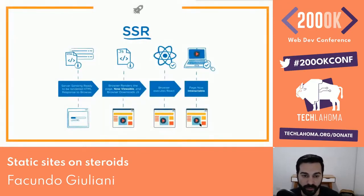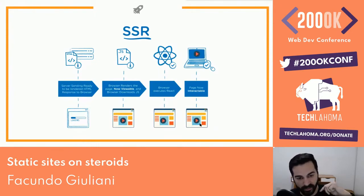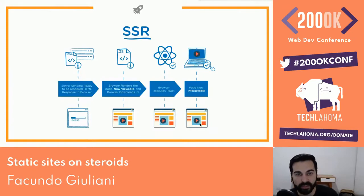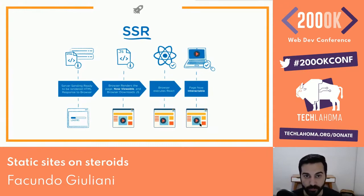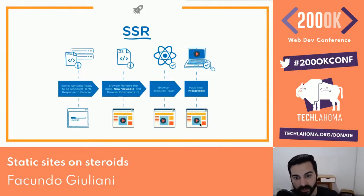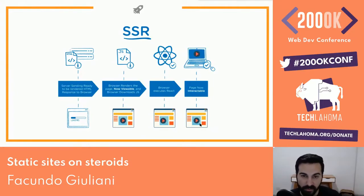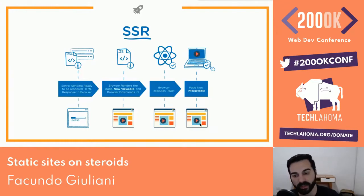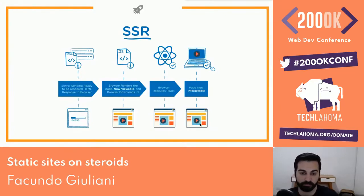For server-side rendering, we request the web page and the web server responds with an HTML document. We immediately have a viewable version of the application. In the meantime, JavaScript files are downloaded and executed, React is initialized, and when all the JavaScript code runs, we have an interactable website. Those are the two approaches to starting a web application.